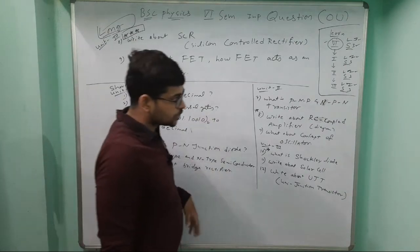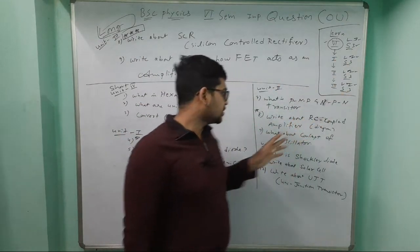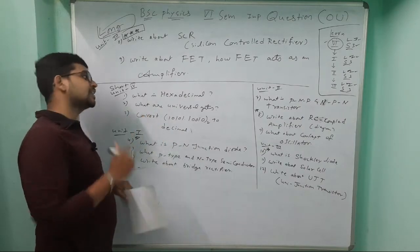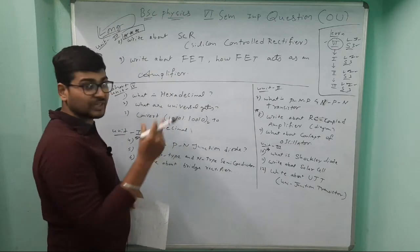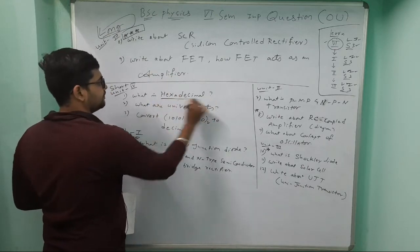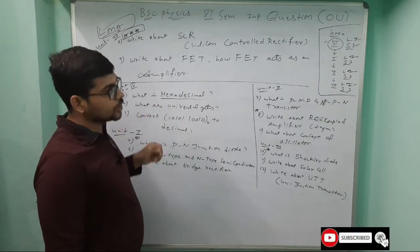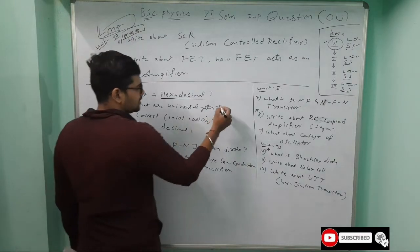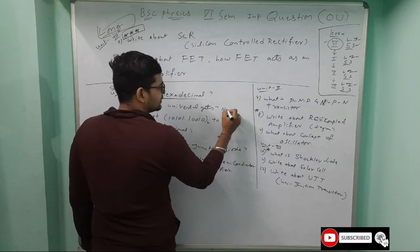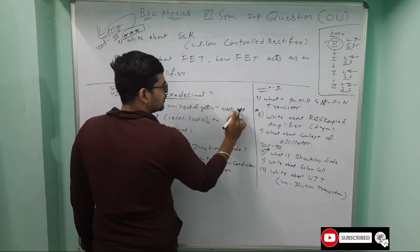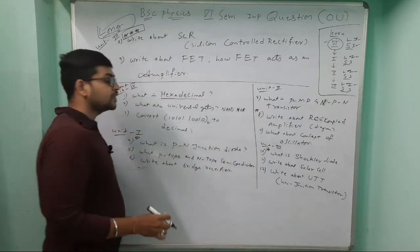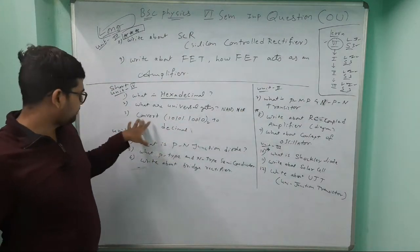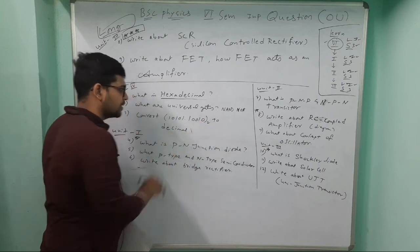Now coming to short answer questions - three from each unit. Unit 4: First, explain about decimal system with example. Second question: what are universal gates? Universal gates are NAND and NOR gates. If you use these gates, we can design any other gates - that's why we call these universal gates. Third question: convert binary to decimal.